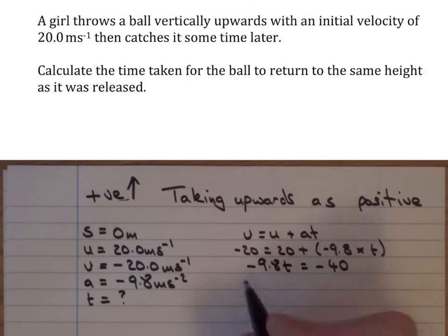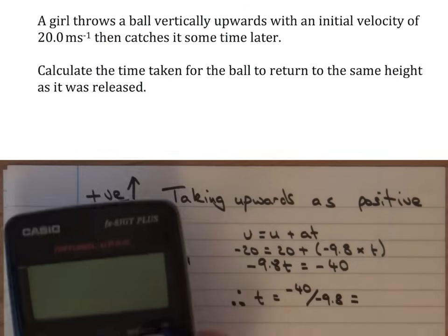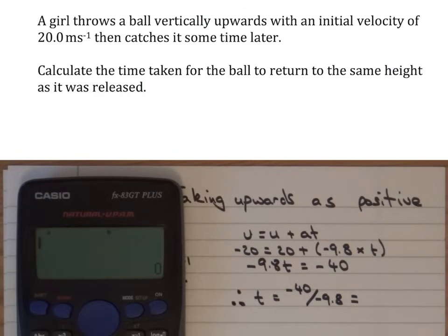And to work out t, I would divide both sides by negative 9.8. So, of course, at that stage, t is equal to negative 40 divided by negative 9.8 is equal to, we'll get the calculator,